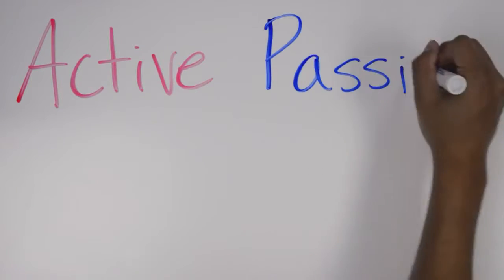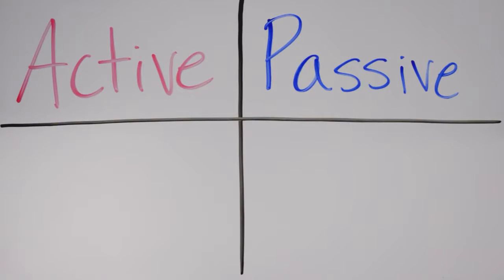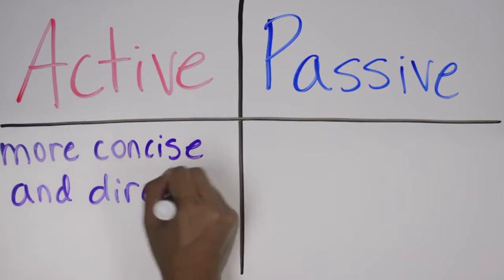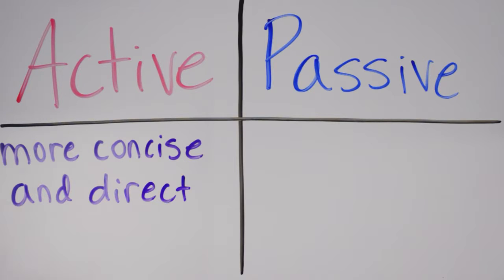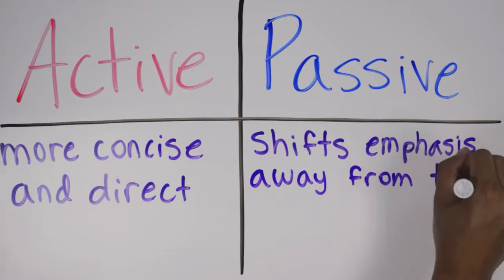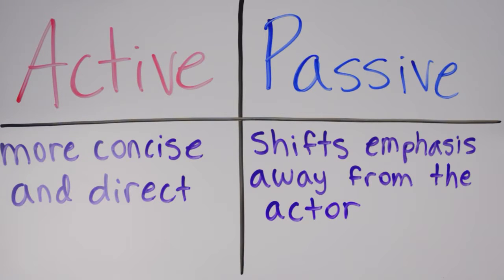Active voice is often a good choice for sentence structure, as passive voice can come off as verbose or wordy at times. Active voice can also be more concise and direct. However, that doesn't mean it's always the best choice. There are many situations where passive voice works just as well or better than active voice, as it can shift emphasis away from the actor. Be careful that the style you use is appropriate and does not misplace emphasis.